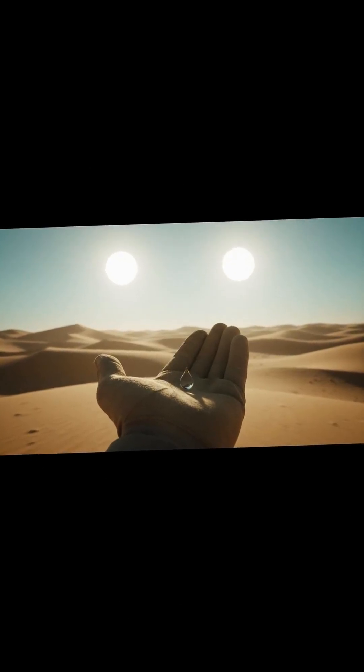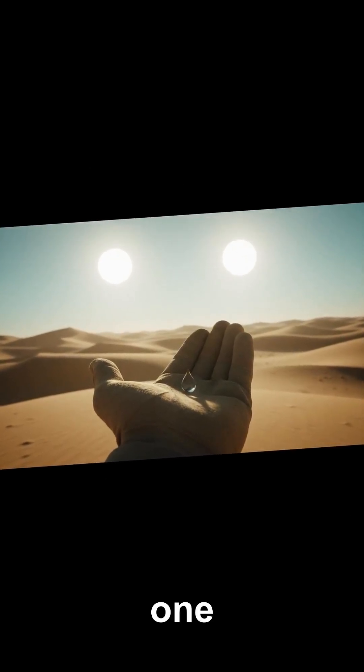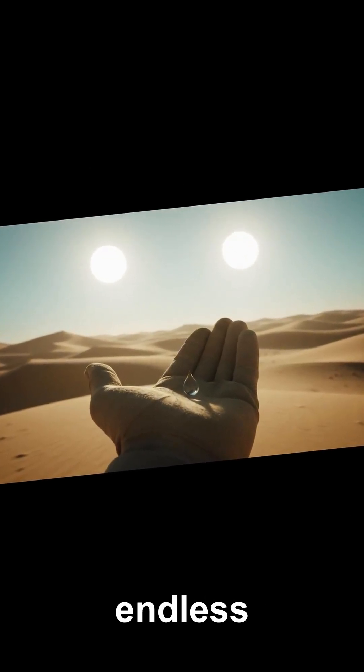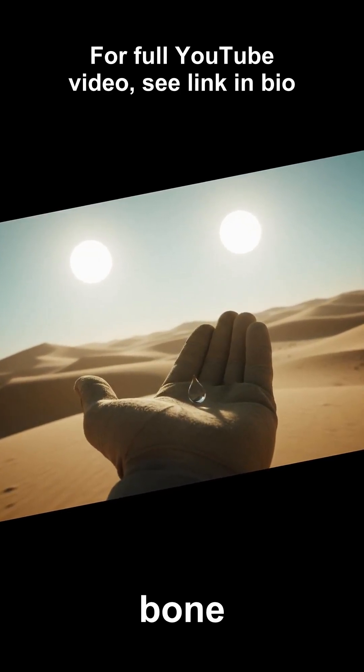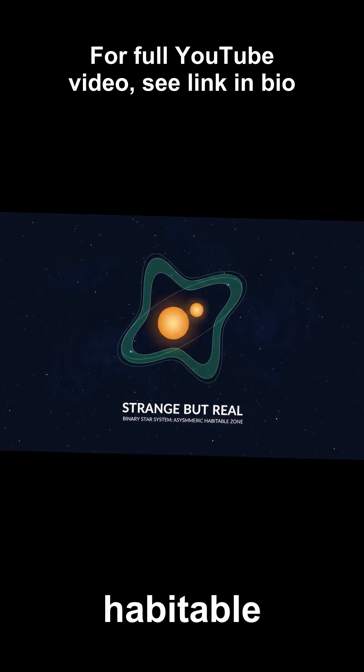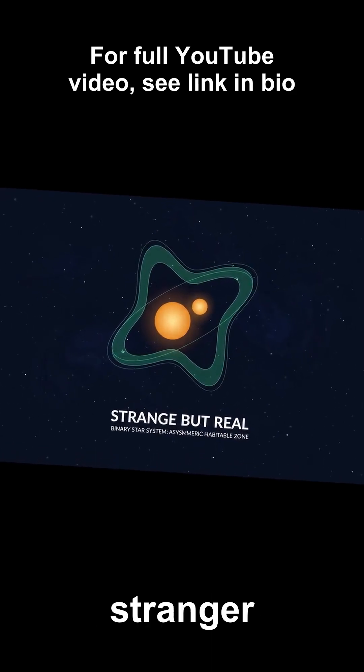But Dune's Desert Planet raises a second question, one the film visualizes with those endless dunes and precious water. Could a world orbiting two stars actually end up bone dry? The answer involves habitable zone geometry, and it's stranger than fiction.